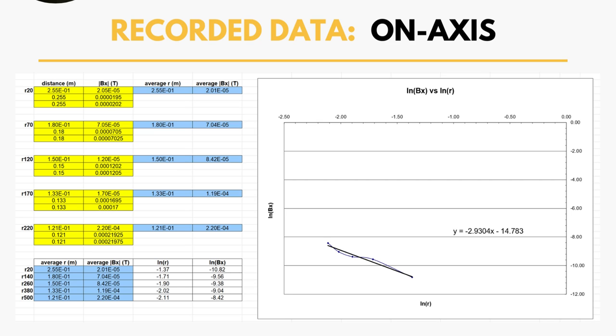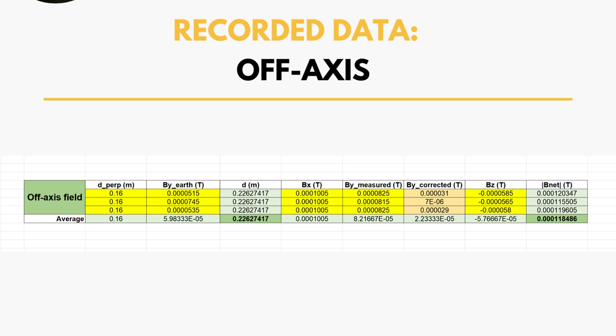This is the off-axis where we were also able to calculate the x, y, and z magnetic field components, as well as the y magnetic field component coming from the Earth. We'll use this as a way to subtract from the overall y component to get the true magnetic field in the y component of just the magnet.